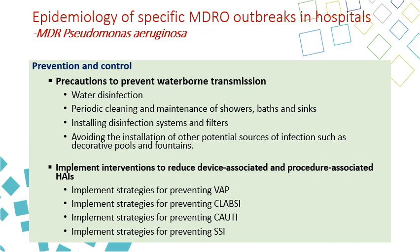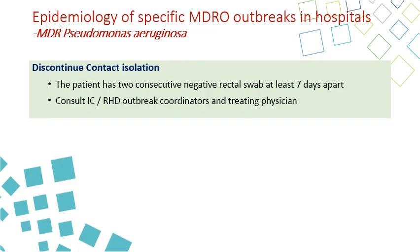Additionally, preventive measures targeting specific infections caused by Pseudomonas aeruginosa include bundles for VAP, CAUTI, and SSI. We can discontinue contact isolation for Pseudomonas aeruginosa patients by having two consecutive negative rectal swabs at least one week apart.